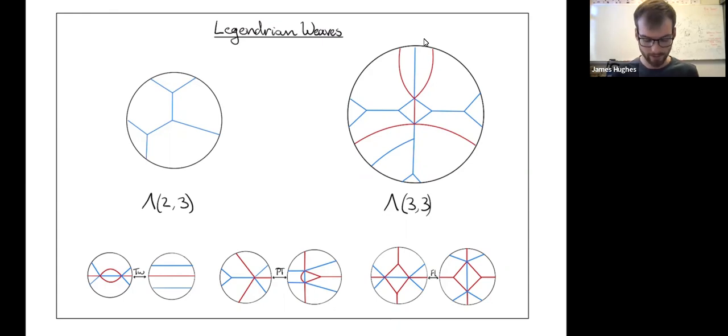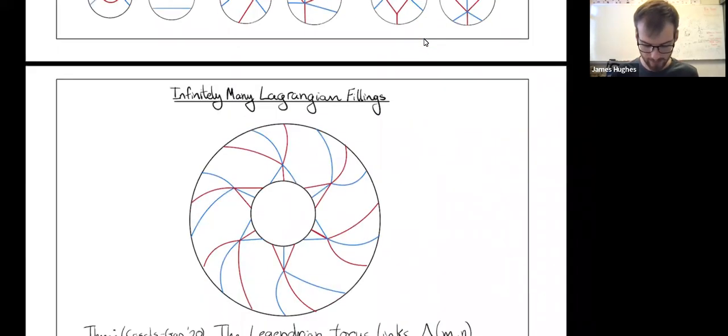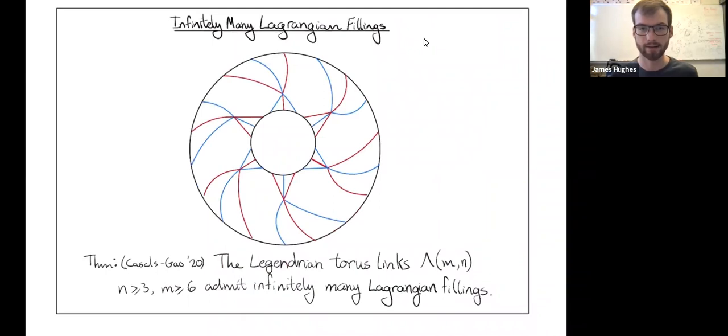What I want to finish with the neat application here is: if I start with the 3-6 torus link, and I do a bunch of Reidemeister 3 moves to get the 3-6 torus link again, then this gives me a Legendrian cylinder, project that down to get an exact Lagrangian cylinder.